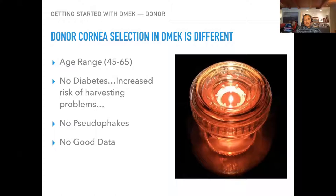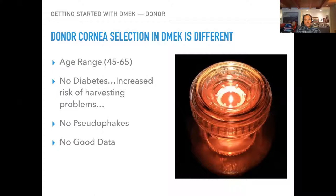In DMEK we want older corneas — age 45 to 65 — which allows easier harvesting, since it's not as adherent to the underlying posterior stroma and unrolls better in the eye. There has been a trend away from using diabetic corneas because of problems harvesting, including tears during preparation. More studies show increased risk harvesting from diabetics, but there are many more diabetics in the donor pool, so I still accept diabetic corneas. We don't want pseudophakic donor corneas because harvesting is difficult with previous incisions.